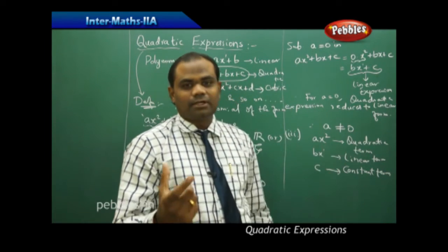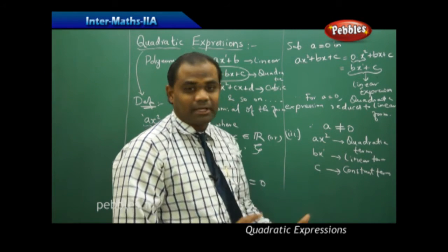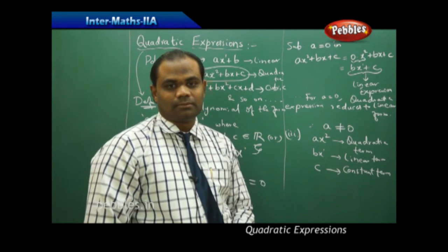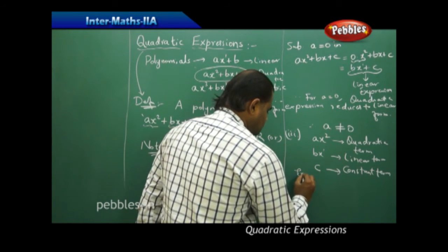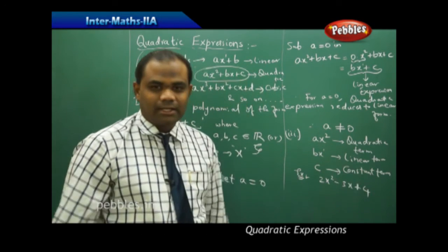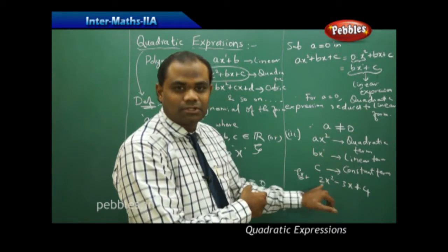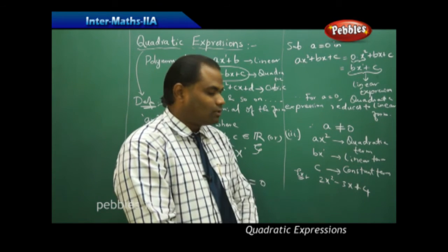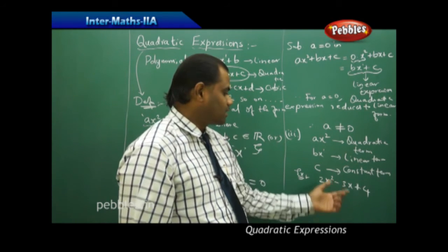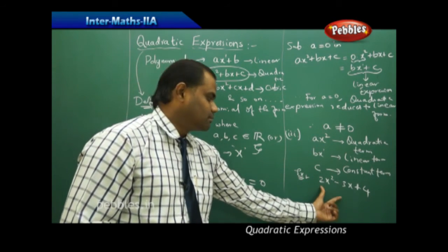Each term of a quadratic expression has its own name. In AX squared plus BX plus C: AX squared is the quadratic term, BX is the linear term, and C is the constant term. For example, in 2X squared minus 3X plus 4: the quadratic term is 2X squared, the linear term is negative 3X, and the constant term is 4.